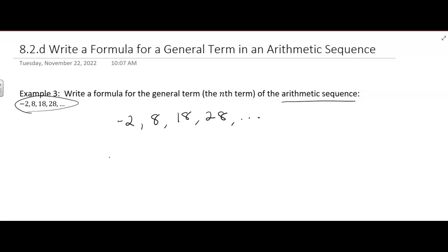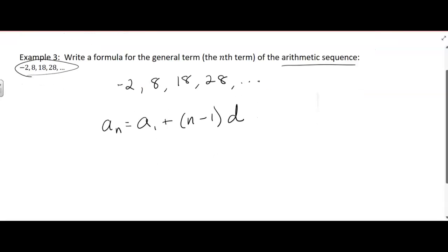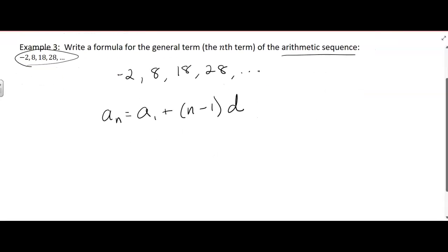So we're going to use the formula, the general term formula, a sub n equals a sub one plus n minus one times d. Now, they want us to write a formula for the general term. That means we won't know n, it'll be in terms of n. But we do know what a sub one is, and we can figure out what d is. And that's what we're supposed to do from the information they give us.